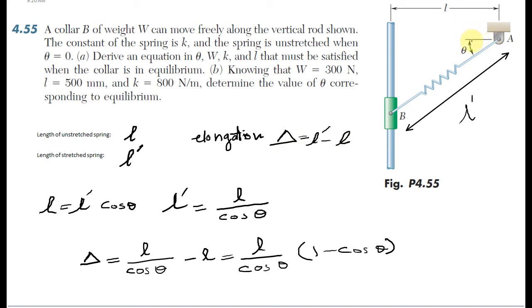We have a triangle here, A, C, and B. If you look at triangle ACB, you can write this equation: L equals L prime cosine theta, or L prime is L over cosine theta.